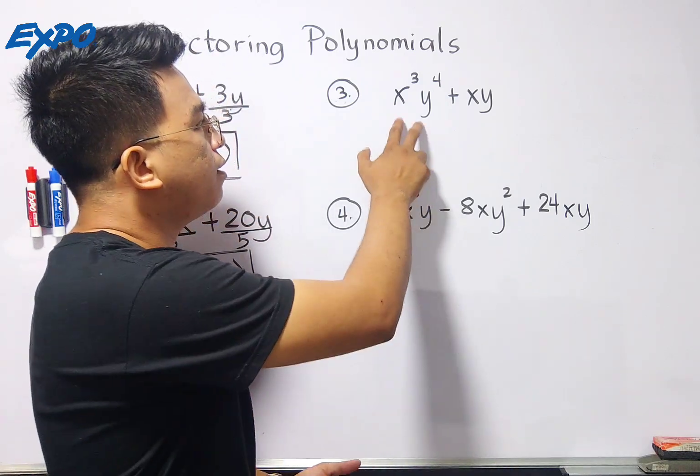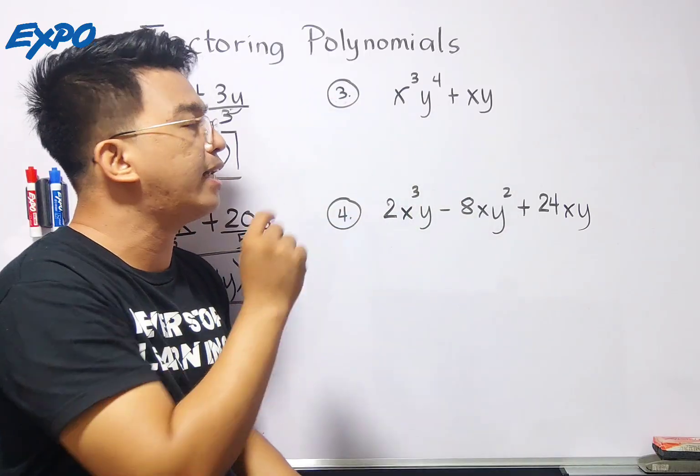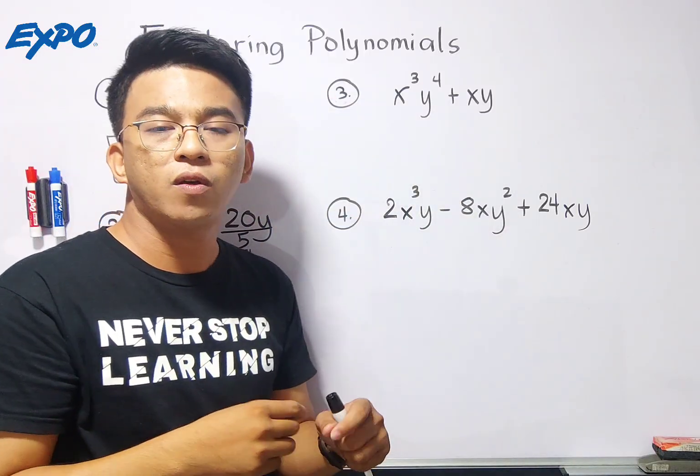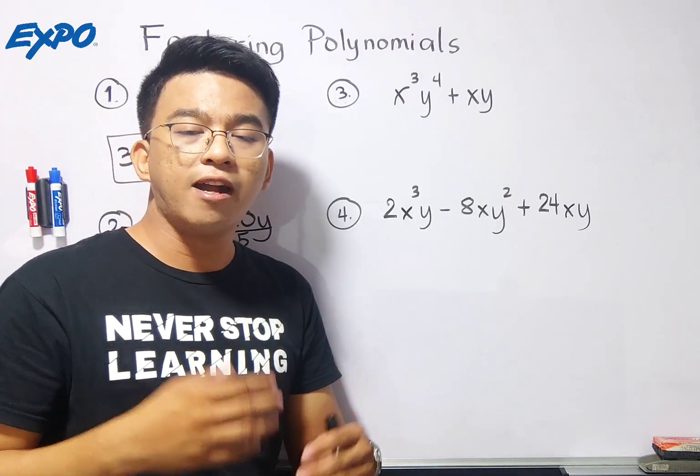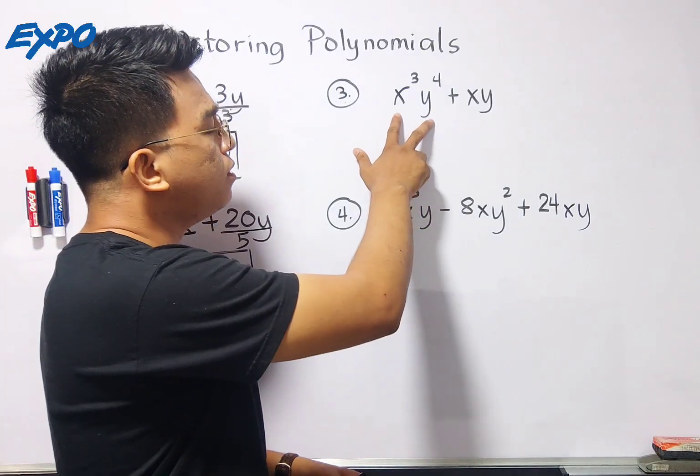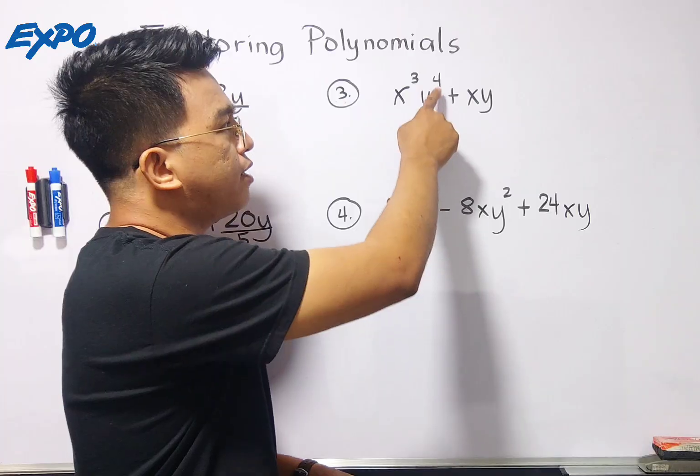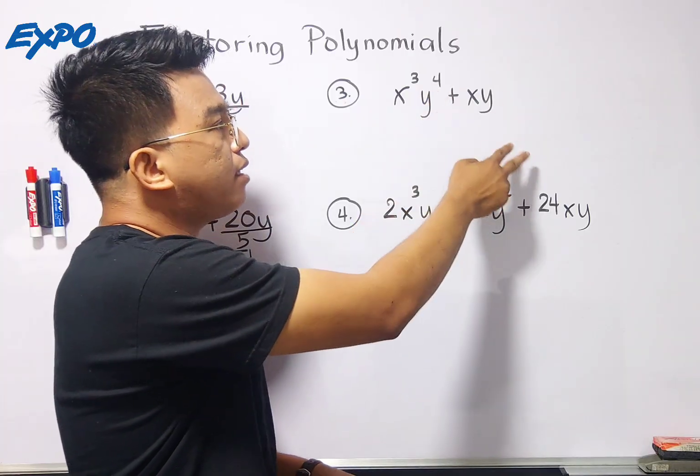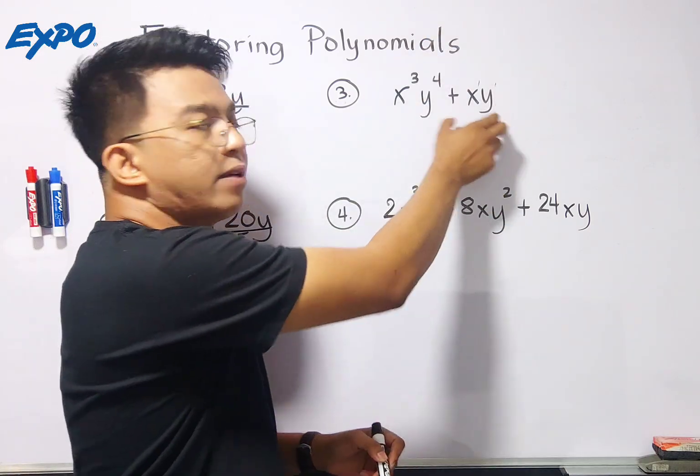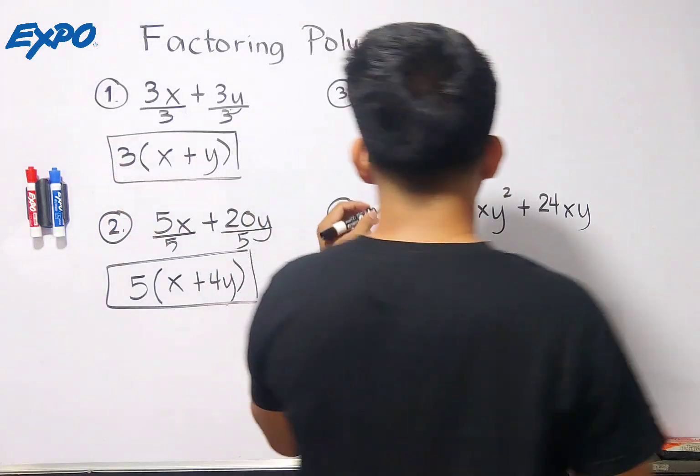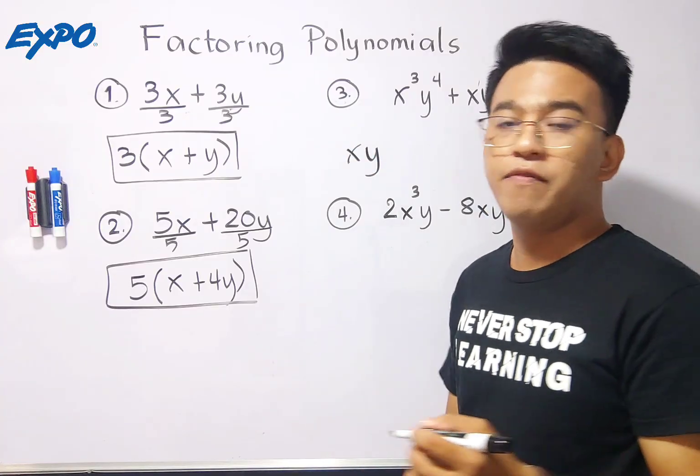you need to understand the variables. For the variables, look, they both have common x and y, x and y. When they both have common x and y, what I do is find the variables with the lowest exponent or least exponent to serve as the greatest common factor. Here, in our first term, the exponent is 3 for x. The exponent of y is 4. In the second term, the exponent of x is 1. The exponent of y is 1. So these will serve as the greatest common factor. It should be x and y. That's our greatest common factor.